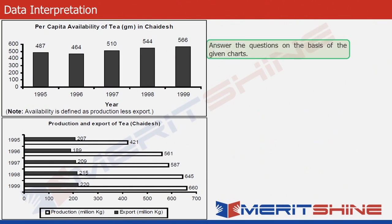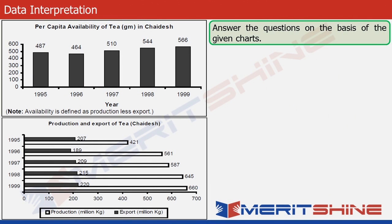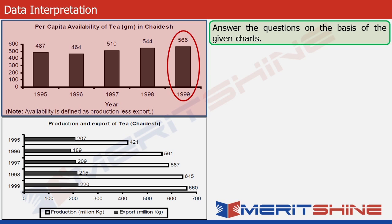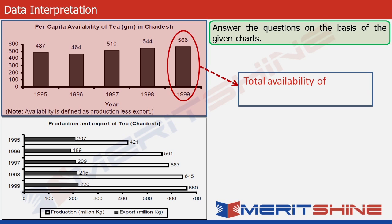There are two charts given to us in this question set. The first chart shows the per capita availability of tea in grams in a country called Chayadesh. For example, the data for the year 1999 is given as 566, meaning 566 grams of tea is available to every individual of Chayadesh in 1999. The per capita availability for a particular year is calculated by dividing the total availability of tea by the total population of the country in that year.